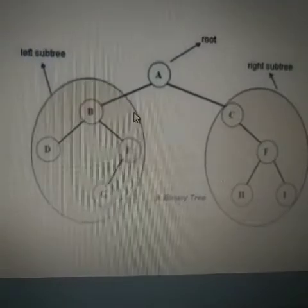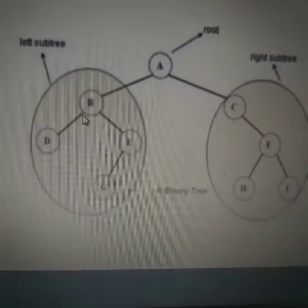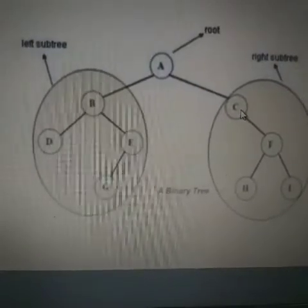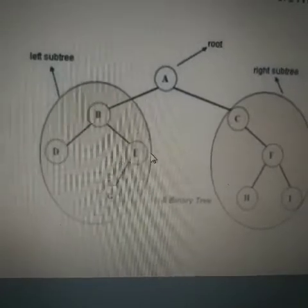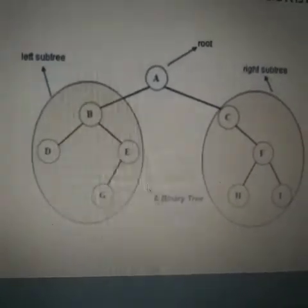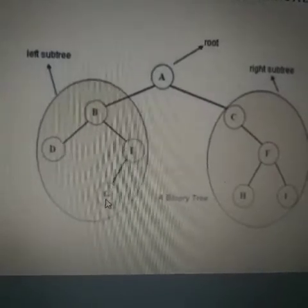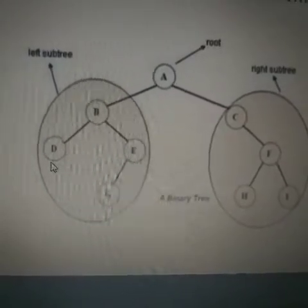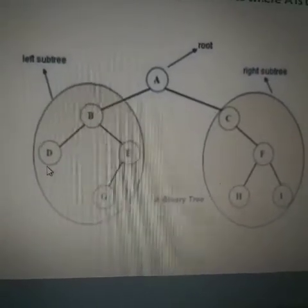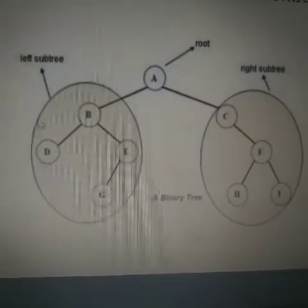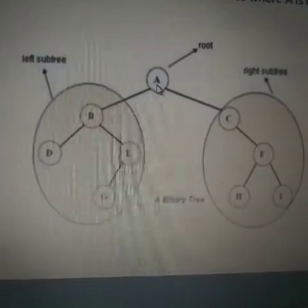For example, A has two children B and C, not more than two. B has two children D and E, only two. E has two children: on the left side is G, on the right side zero, meaning only one. D has no children, zero only. So it can be zero, one, or two children, but not more than two.